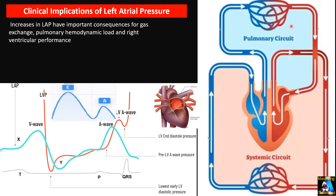As you remember from the first two parts, diastolic dysfunction causes increasing left atrial pressure. Left atrial pressure is very critical for gas exchange in the lung and hemodynamics of the pulmonary circulation system, including pulmonary pressure. When we have increased left atrial pressure due to diastolic dysfunction, we will have some degree of pulmonary edema and eventually respiratory failure, usually presenting with dyspnea.